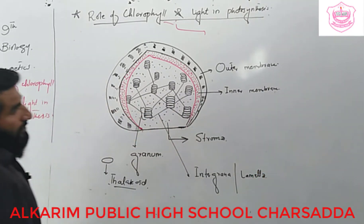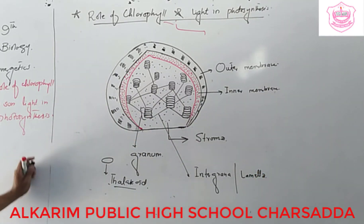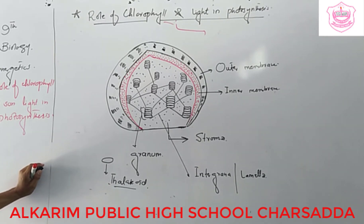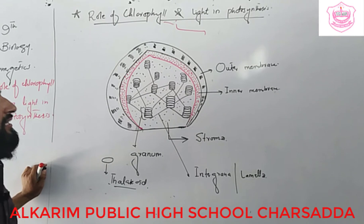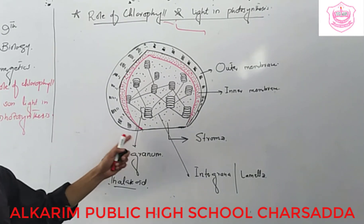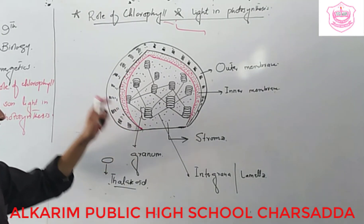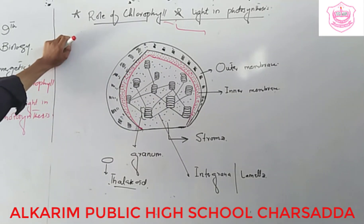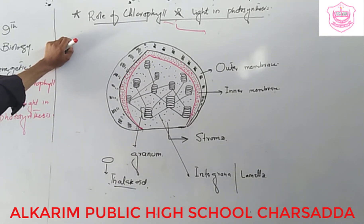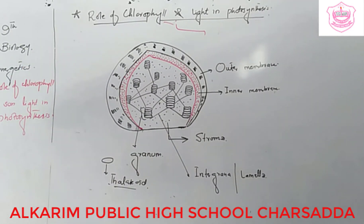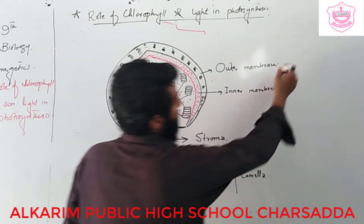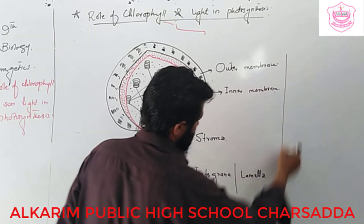When CO2 is diffused from the environment through the stomata and goes into the mesophyll cells, inside the mesophyll cell the chloroplast is present. Inside its stroma, the CO2 combines with the watery portion of the stroma and forms carbohydrates.